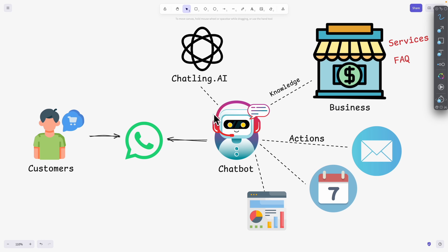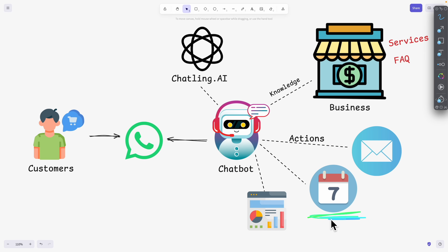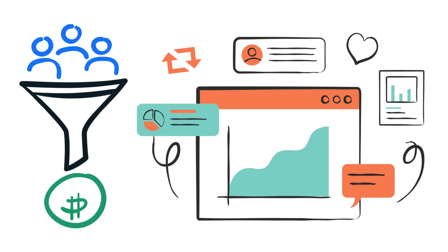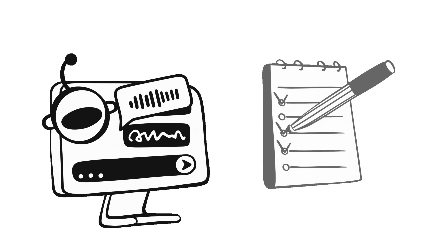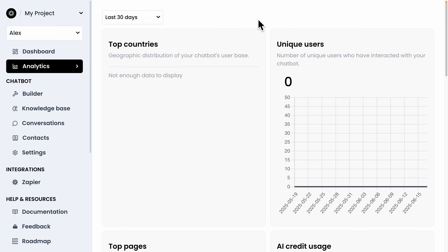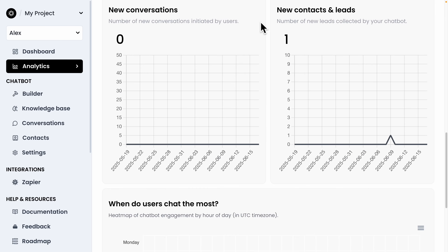It gets even better because this AI chatbot can also take powerful actions for your business. Imagine it can automatically send a follow-up email to a potential lead, or let a customer book a meeting directly on your calendar without any back-and-forth. Behind the scenes, every interaction is tracked for lead generation by saving every new person as a lead in your contact list.